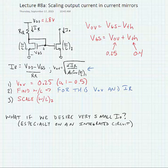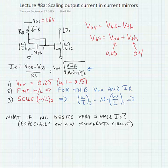If we want to get a different output current, we're going to scale W over L2 relative to W over L1. For instance, we might make W over L2 equal to N times W over L1, and this would mean that I out would be N times I ref.